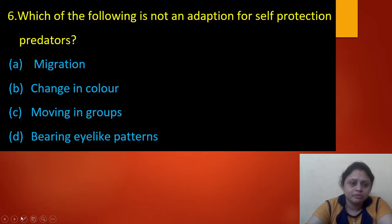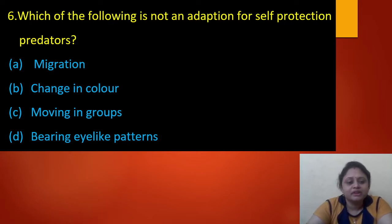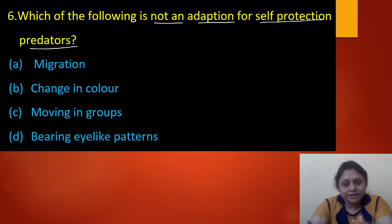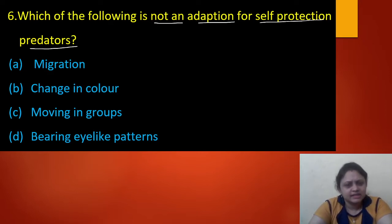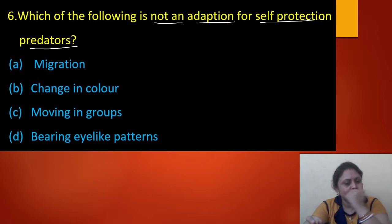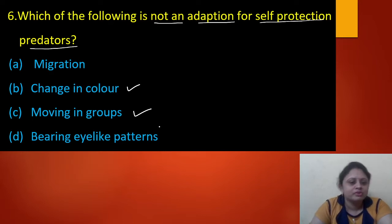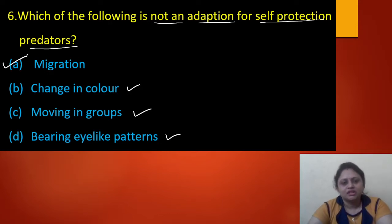Next question: which of the following is NOT an adaptation for self-protection from predators? Option A: migration. Option B: change in color. Option C: moving in groups. Option D: bearing eye-like patterns. Animals try to protect themselves from predators. Migration involves moving from one place to another to adapt to climate — not to escape predators. Changing color, moving in groups, and bearing eye-like patterns are all for protection. So the correct answer is option A — migration.